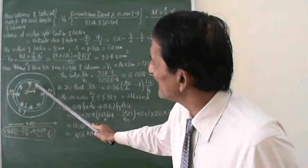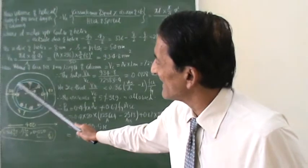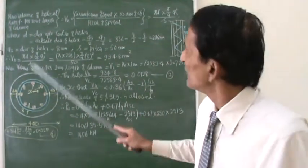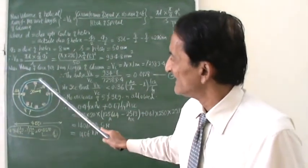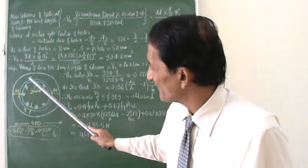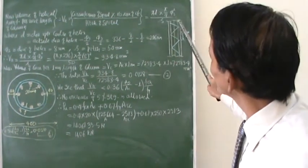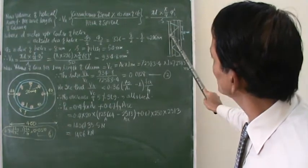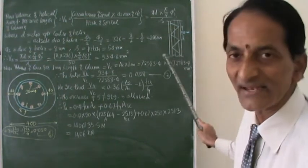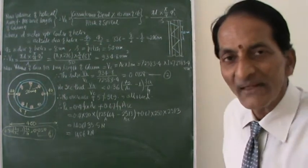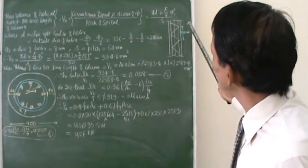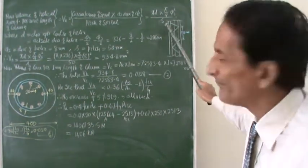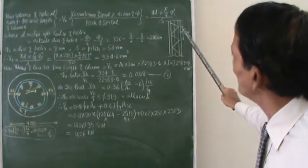8 bars of 20mm diameter are provided. The helix reinforcement starts from one point and winds around like this. In the first instance we are asked to calculate the strength of this column, and the pitch is 15mm.